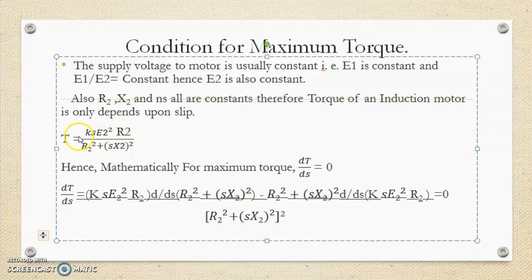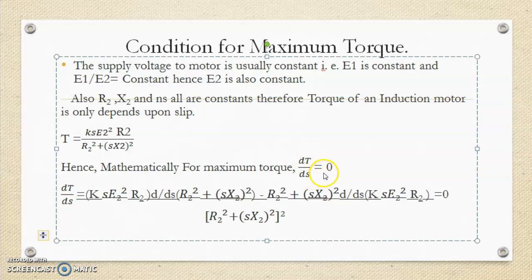Since torque is directly proportional to slip, slip is the only parameter responsible for controlling torque. Hence, to find the condition for maximum torque, we have to take the derivative of torque with respect to slip, that is dT/dS equals zero.